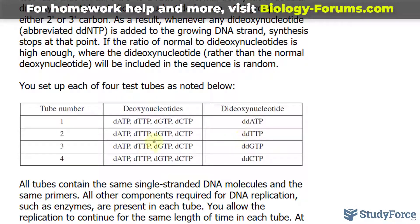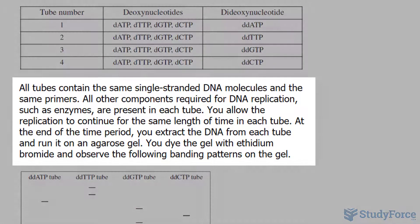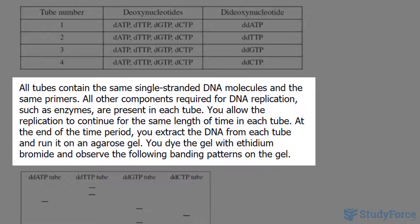In test tube 2, we have the same deoxynucleotides as in test tube 1, and the only dideoxynu­cleotide added here is the one associated with thymine. The same idea applies in tubes 3 and 4. Notice how their dideoxynu­cleotides differ. All tubes contain the same single-stranded DNA molecules and the same primers, and all the components required for DNA replication such as enzymes are present in each test tube. You allow the replication to continue for the same length of time in each test tube.